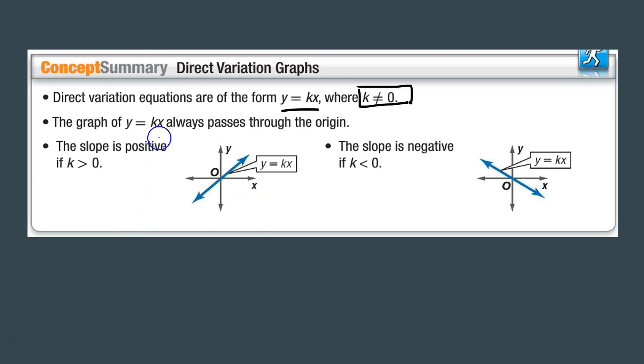The graph y equals kx always passes through the origin, which is at (0,0), and you'll see that it happens on both of these with a positive graph and a negative graph as well. Here's an example when the slope is positive: if k is greater than 0, it'll show like this and notice it passes through (0,0). If the slope is negative, k will be less than 0, but notice it also crosses at (0,0).